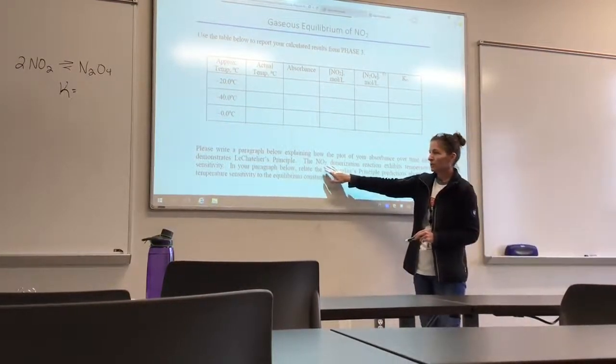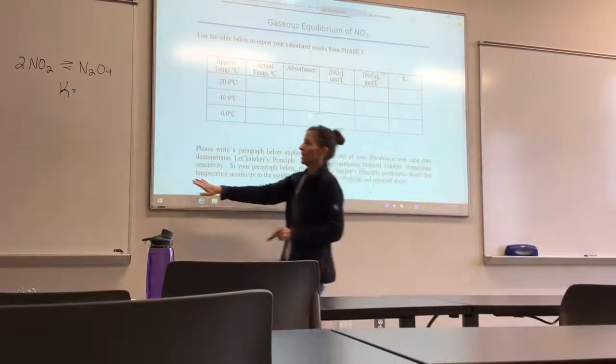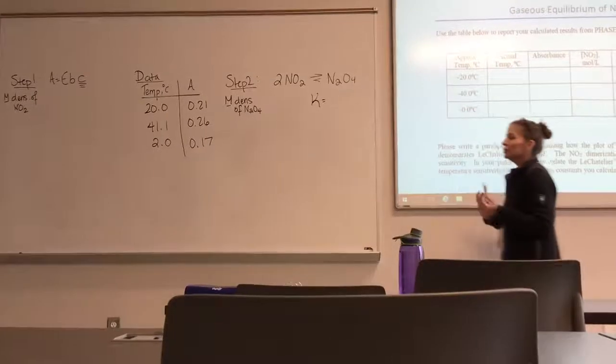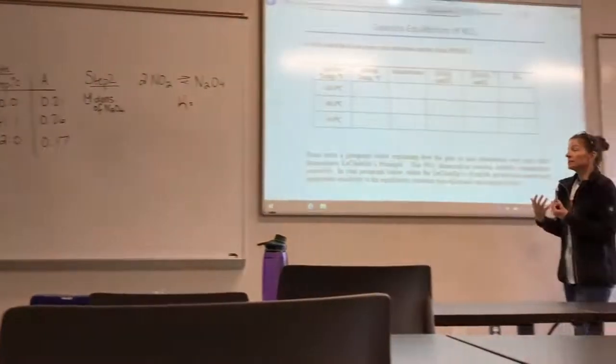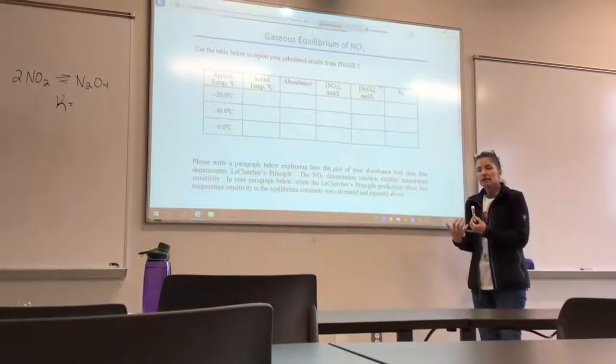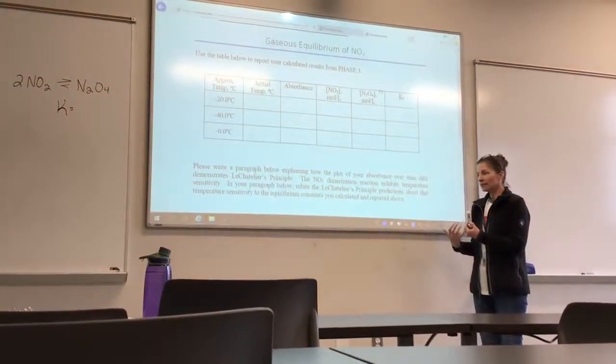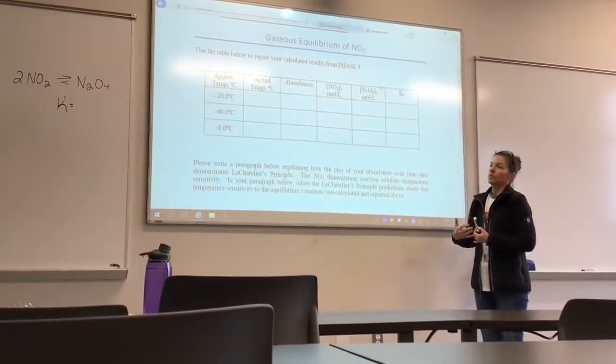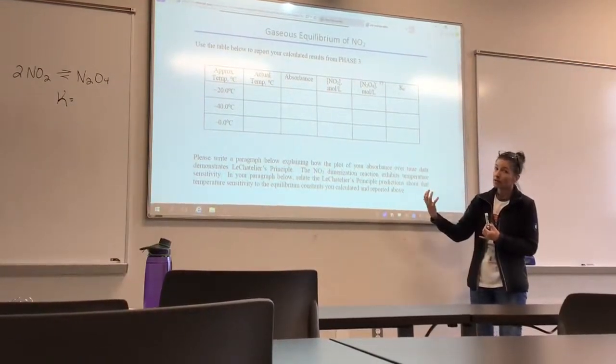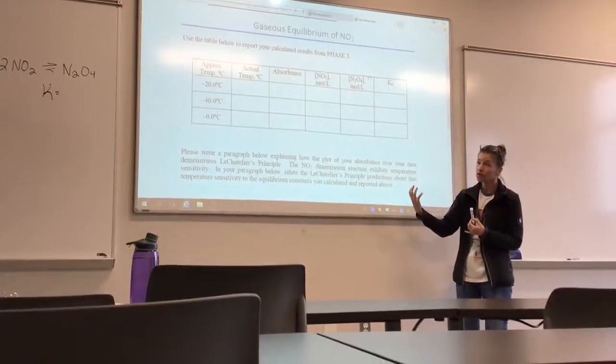All that's referring to is this equation right here. So you have 2NO2 yielding N2O4. You just need to tell me, because this is an exothermic reaction, how heat is being affected, or how it's affecting your equilibrium. So this is an exothermic reaction, so heat would be a product or reactant. You should answer that first.